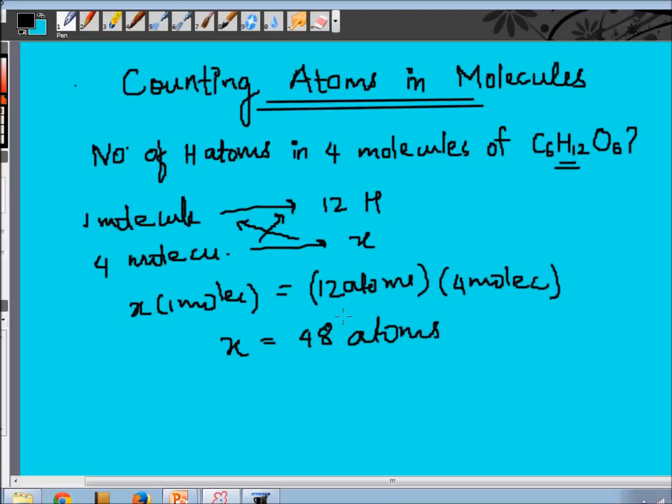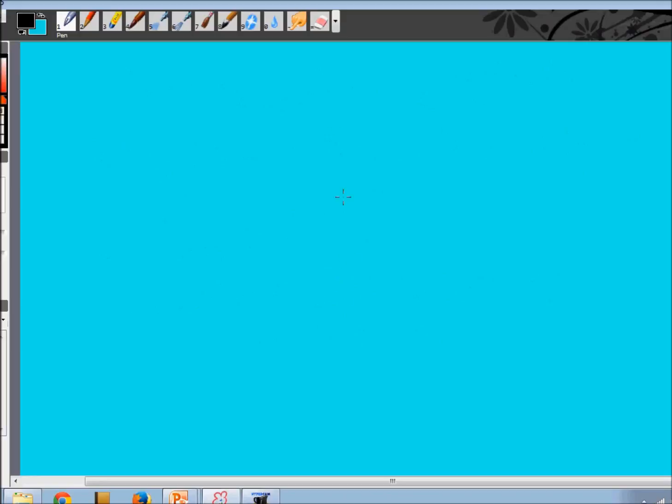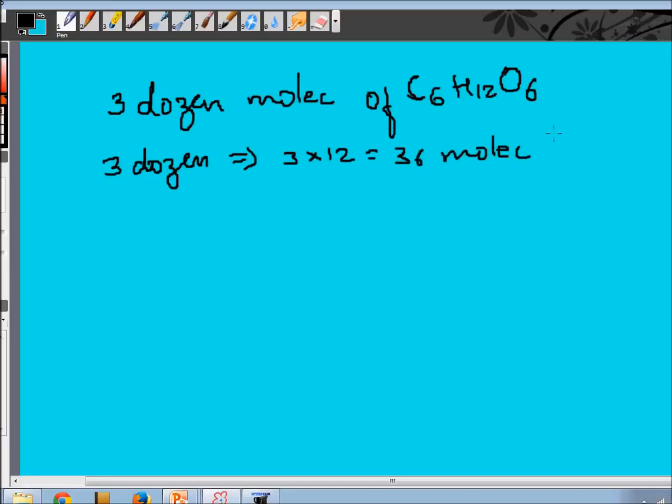Let's take another example. Say you have three dozen molecules of glucose. We already know that one dozen has twelve entities. So three dozen molecules of glucose implies three into twelve, that is thirty-six molecules of glucose. Now the question has become the same as the previous one, except for the number of molecules. There you had four molecules of glucose, here you have thirty-six molecules of glucose.